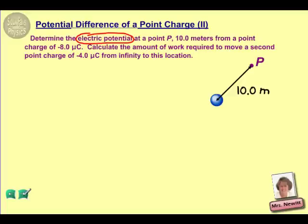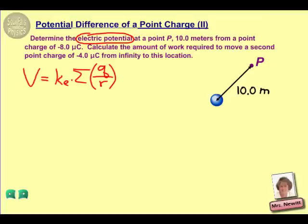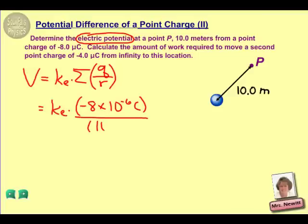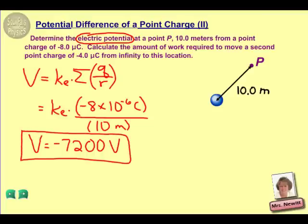Remember, electric potential and potential difference are just different ways of saying volts. For a point charge, we determine the voltage by this equation: the constant K times the sum of charges over their respective radius values. In this case, there's only one charge, so this equation simply turns into K times our point charge of negative 8 times 10 to the negative 6 Coulombs divided by the radius of 10 meters. Working those out, we get a voltage value of negative 7,200 volts — that is the electric potential at point P.